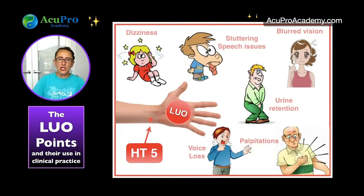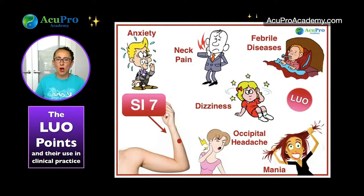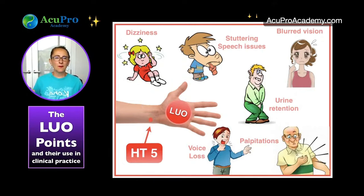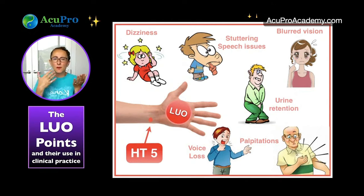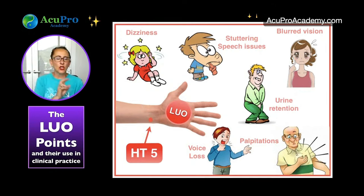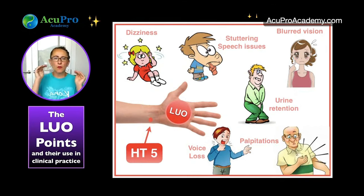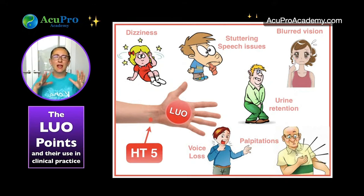The next pair is HT5 and SI7. The heart and small intestine connection can be a bit tough to understand — the heart is about the mind and emotions, while the small intestine separates the clear from the turbid, managing fluids. The connection is twofold: emotional and physical. Emotionally, when we can't see right from wrong because our mind is clouded or turbid, these two points help balance that.